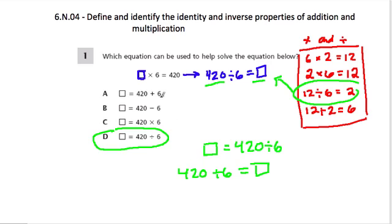Now, these other operations—420 plus 6—that would work if the original equation said something like, something minus 6 is 420. Then 420 plus 6 will give us that missing something. This equation right here is if we started with something, something plus 6 equals 420.